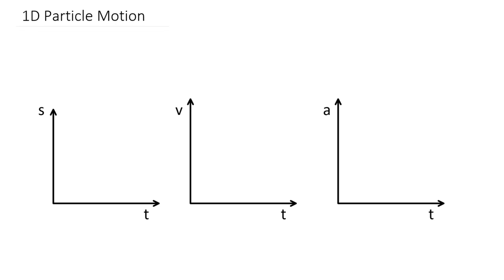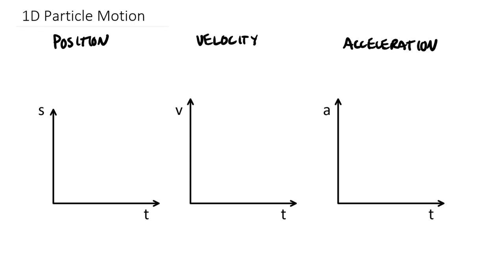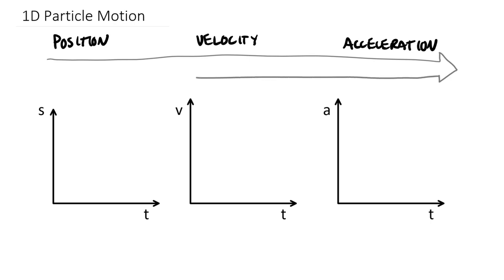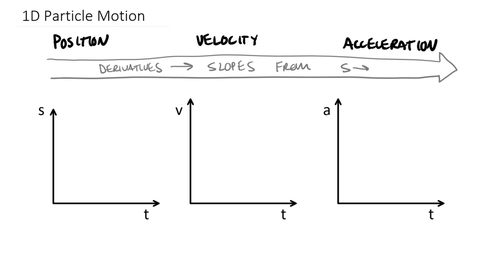As we look at one-dimensional particle motion, we can think that we're relating three terms: position, velocity, and acceleration. As we go from position to velocity to acceleration — a recollection from your physics knowledge — we essentially are taking derivatives. Derivatives are slopes of graphs. We often use S for one-dimensional position and R as we get into two-dimensional, so going from S to V to A means taking derivatives.